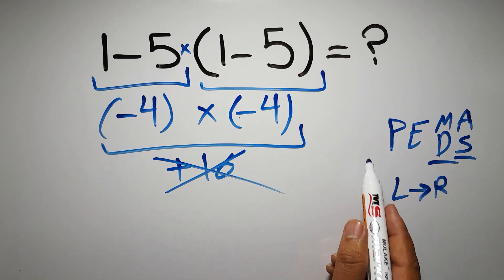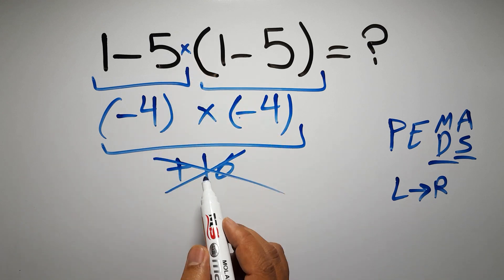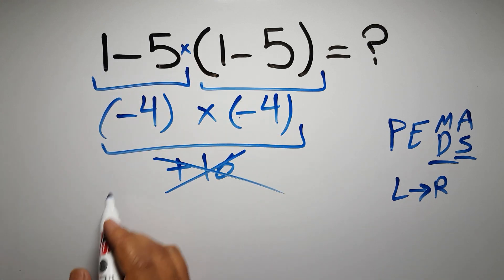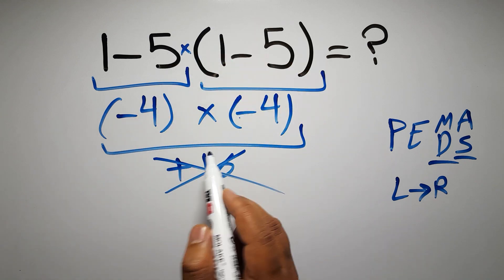Okay, so according to the PEMDAS, first we have to do this parentheses, then this multiplication, and finally this subtraction. If we do this subtraction before this multiplication or this parentheses, it is wrong.